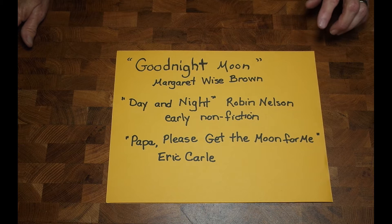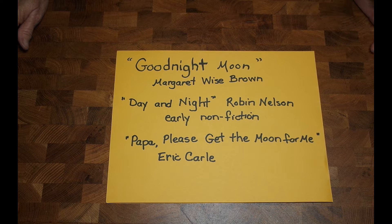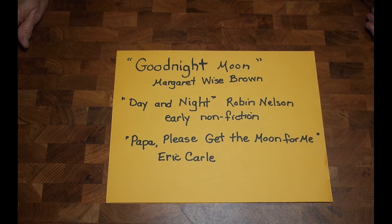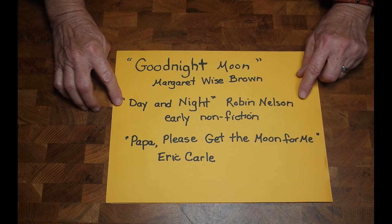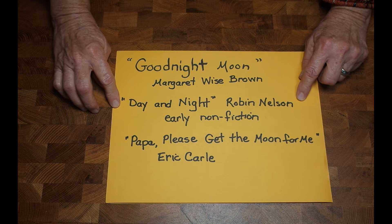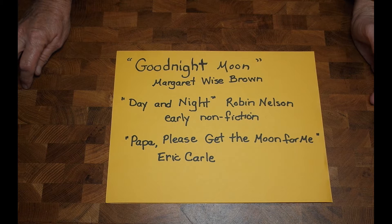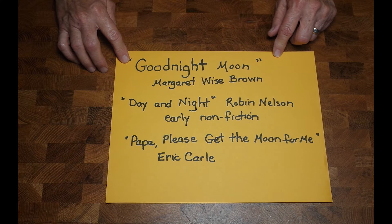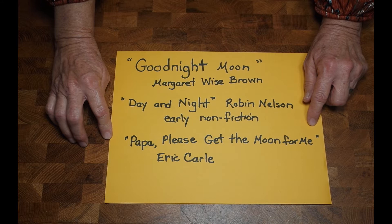To start, I'd ask the children if they notice the days seem to be shorter — or longer, depending on when you do this lesson — and have that discussion. Maybe they know that if we are in daytime, the other side of the world is in darkness. A really good book to start with is the early nonfiction book Day and Night by Robin Nelson. This project also generates interest in the night sky, so you might love to read Goodnight Moon by Margaret Wise Brown or Papa, Please Get the Moon for Me by Eric Carle.